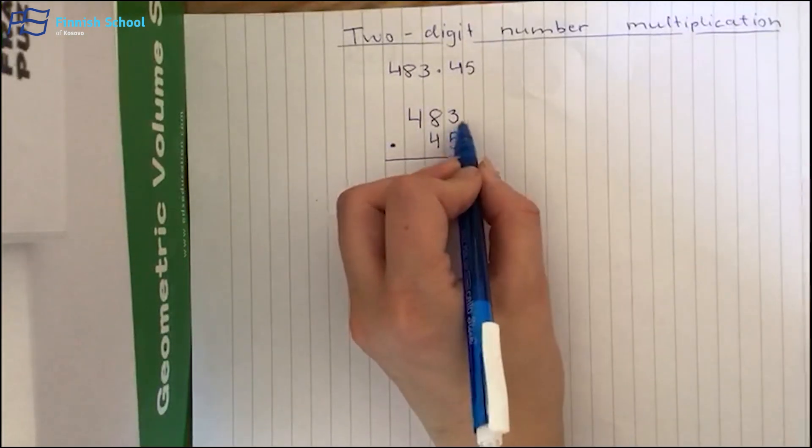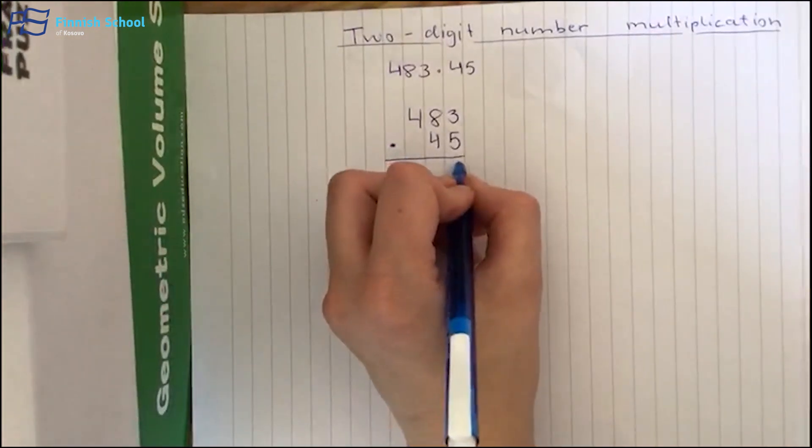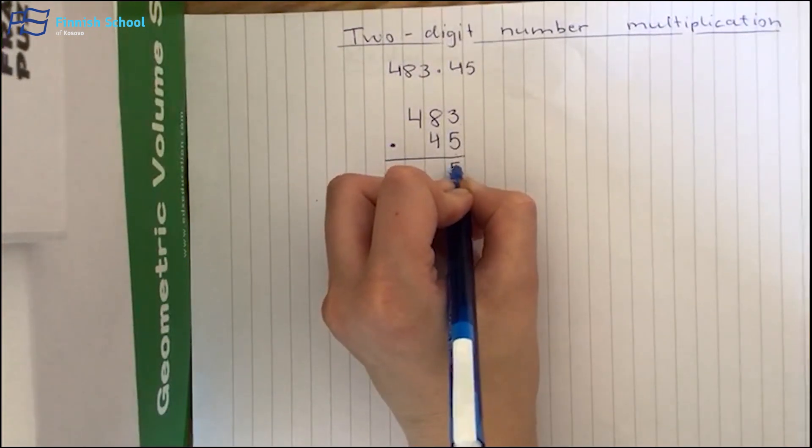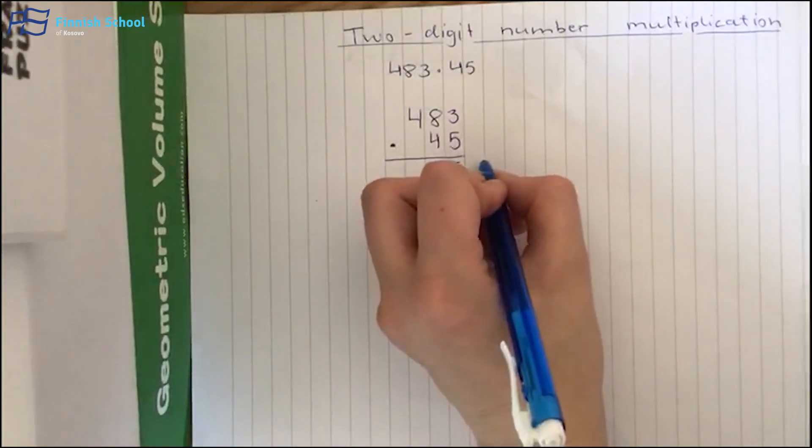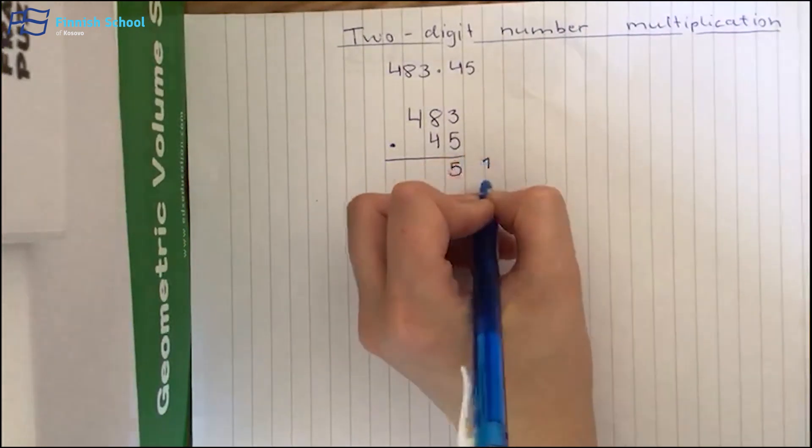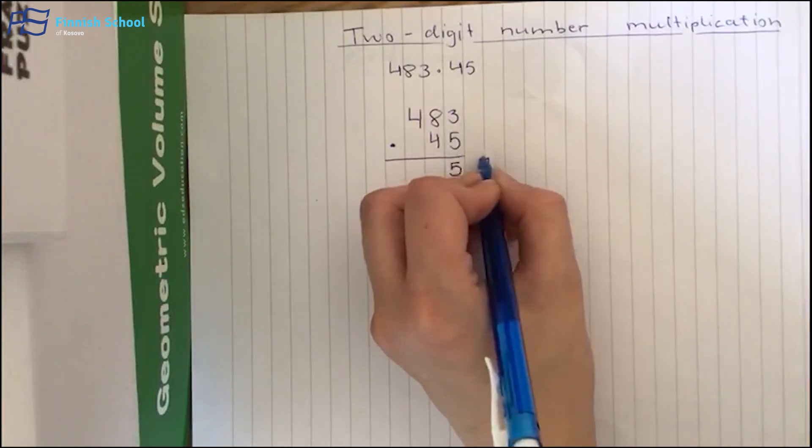So 5 times 3, it's 15, and now we have two numbers. So 5 from 15 comes here, and number 1 from 15 comes here. So we will remember it.